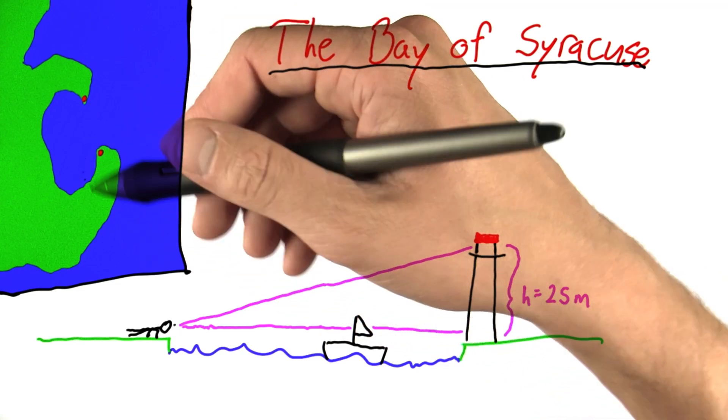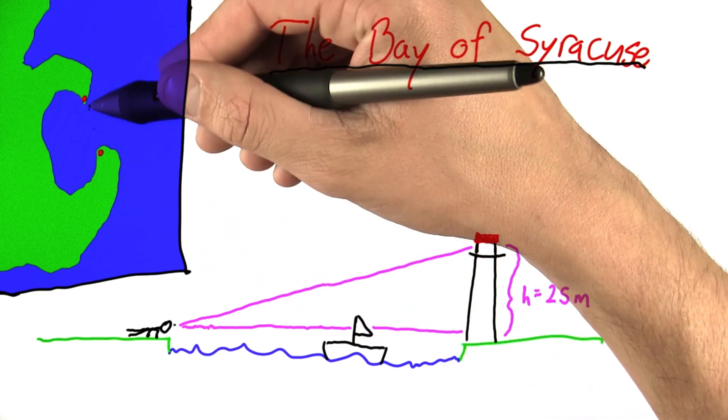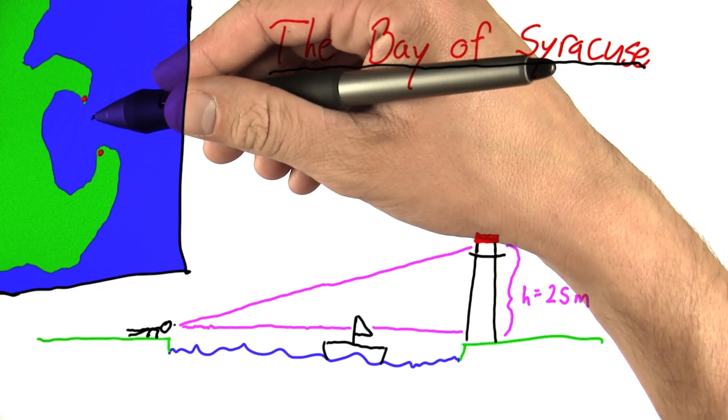I want to determine a way to figure out the width of the mouth of this bay using trigonometry.